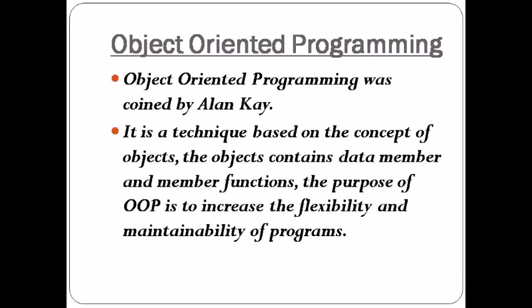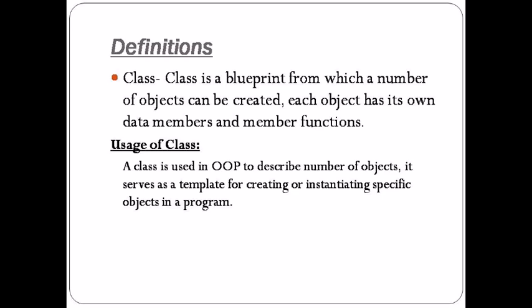Now let's go to the concept of class and object. A class is a blueprint from which a number of objects can be created, and each object has its own data members and member functions. By blueprint, we mean a structure from which we create a lot of objects, and every object has its own data members and member functions.